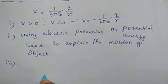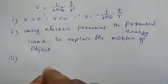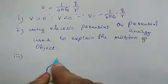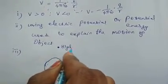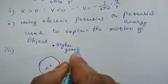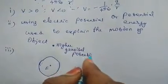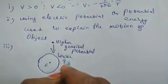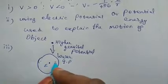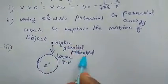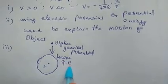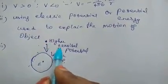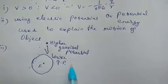A similar procedure is followed for the gravitational field. On Earth, a unit mass moves from higher gravitational potential to lower gravitational potential. The same applies to charges: a positive charge moves from higher electrostatic potential to lower electrostatic potential.